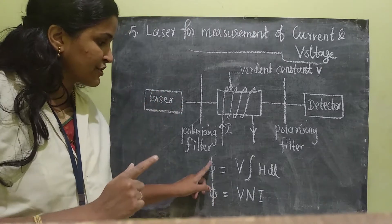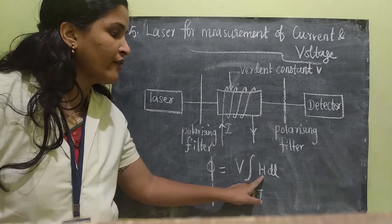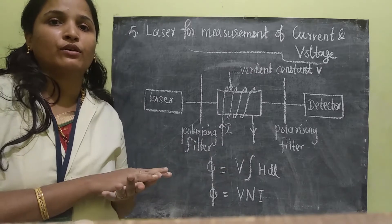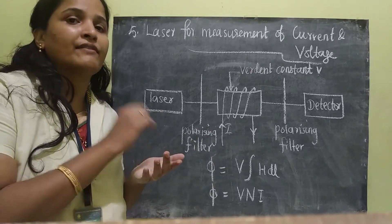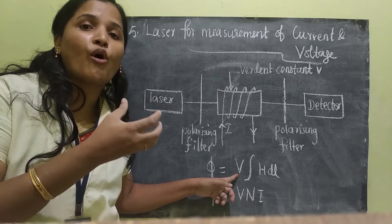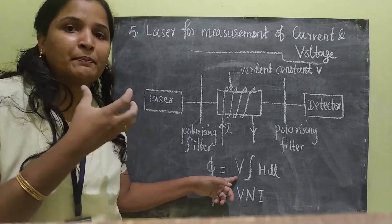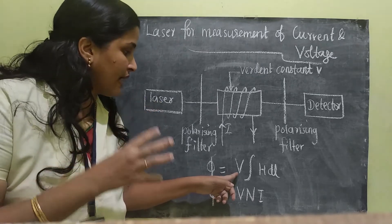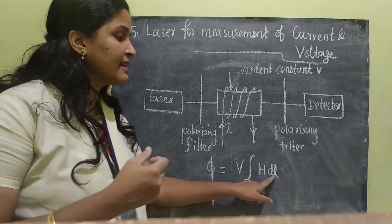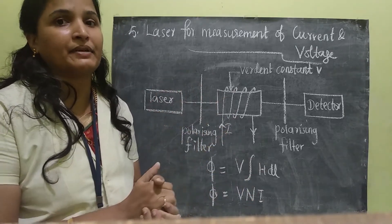The angle of polarization is denoted by phi, and it is given by the formula V multiplied by the integral of H·dL. V is the Verdet constant of that medium. The magnetic field medium has some Verdet constant denoted as V, which is the measure of the strength of the Faraday effect of that particular medium. In the integration, H is the magnetic field intensity and dL is for a particular length, integrated along the complete path length capital L.